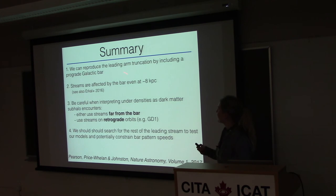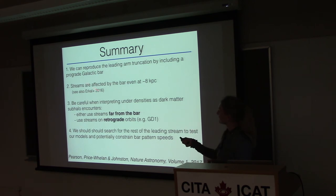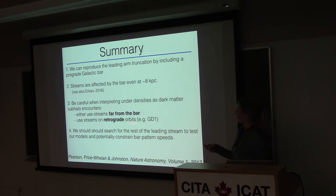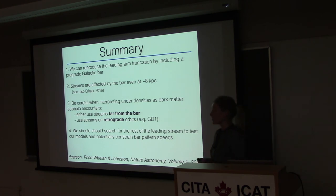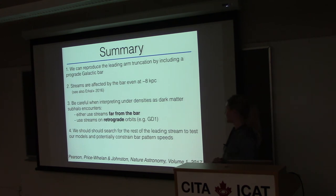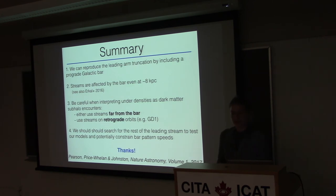To summarize: the galactic bar can reproduce the PanSTARRS truncation that we see, and streams are affected by the bar even at 8 kiloparsecs. The dark matter subhalo community should be a little cautious when interpreting underdensities as being from dark matter subhalo interactions. I hope that we could use the Palomar 5 stream in the future to constrain the galactic bar properties. I'll take any questions.